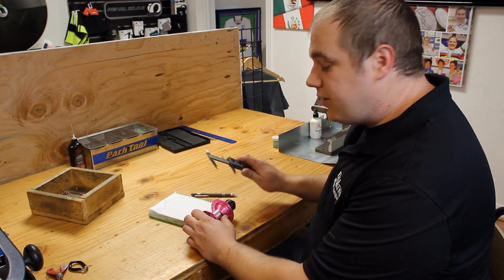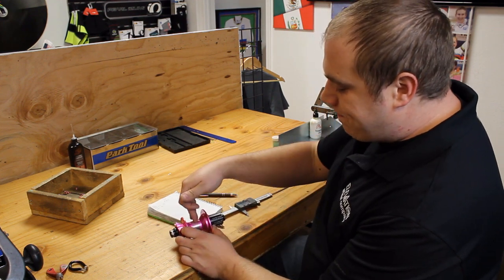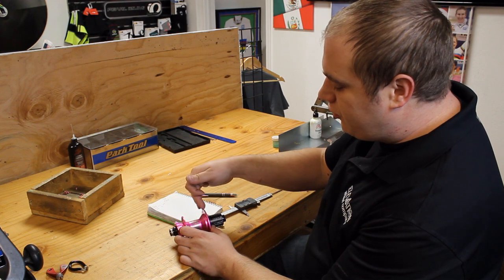The other dimension you need to measure is what's called the center to flange. So center line of the hub to the flange.